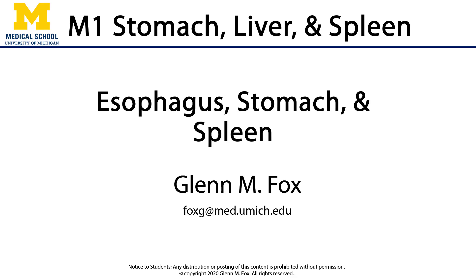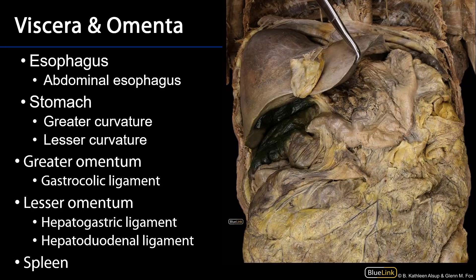Hello everyone, this is Dr. Glenn Fox. Let's talk about the esophagus, stomach, and spleen. This is a fairly typical superficial view of the contents of the abdominal cavity. The anterior wall has been removed, and one of the most striking features we can see here is the liver, occupying space in the right hypochondriac and epigastric regions. It's being retracted slightly, giving us room to see the abdominal part of the esophagus.